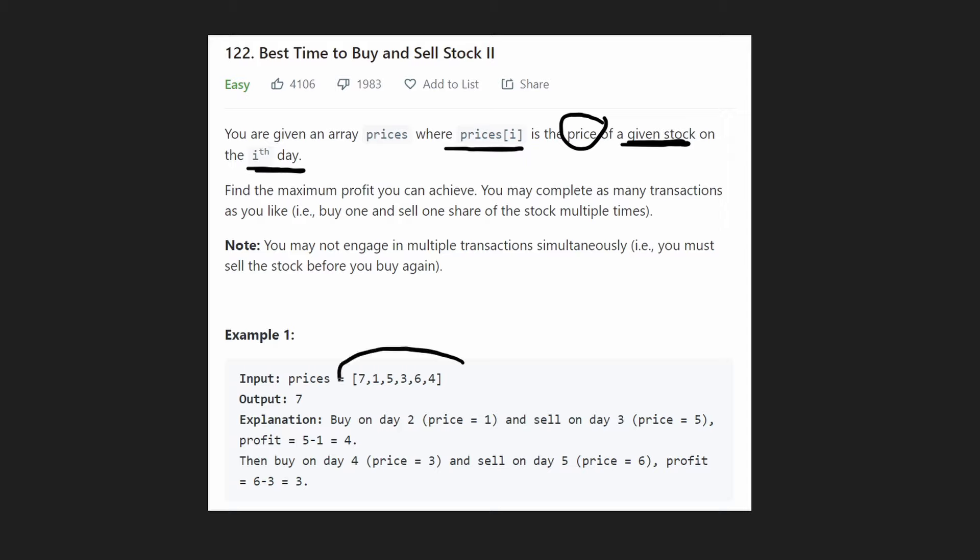So they give us this example input array and they say the max profit we could possibly do is seven. That's if we buy on day two, sell on day three, buy again on day four, sell on day five. And in that case, we would get a total max profit of seven.